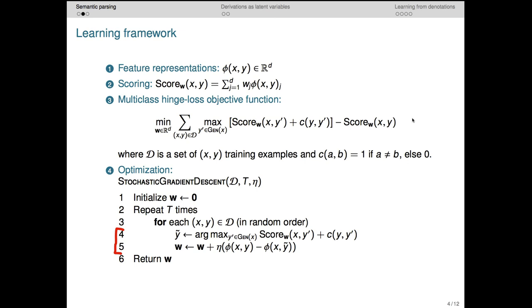Again, we see the same dynamic. In line 4, we use the current grammar and weights to pick a logical form output. If it's the same as the actual output in our training data, then this subtraction here is 0, and nothing changes.